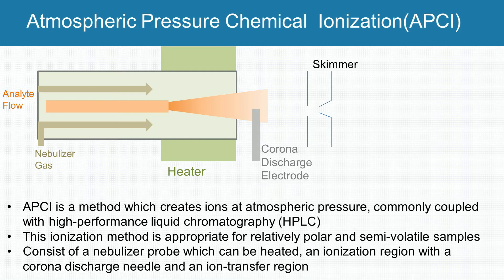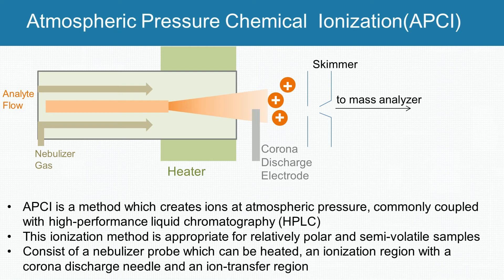A corona discharge is where a highly charged electrode creates an electric field strong enough to ionize nearby molecules. The resulting sample ions then pass through a skimmer into the ion transfer region. Then, ions are injected into the mass analyzer for detection.